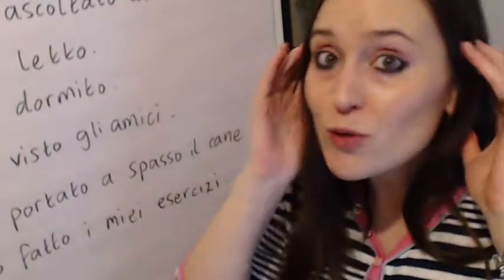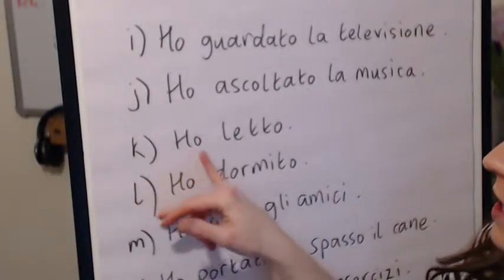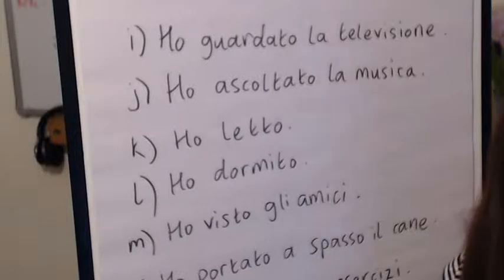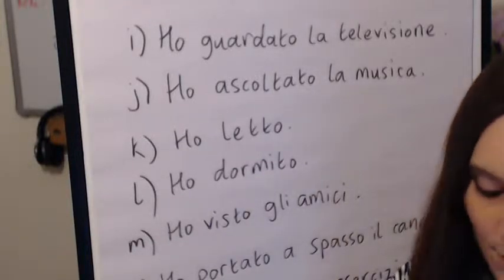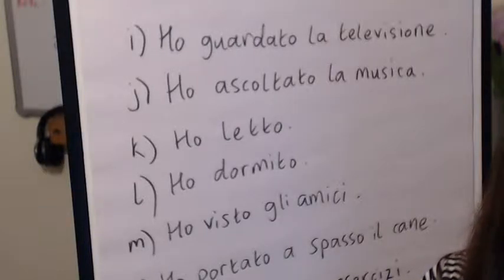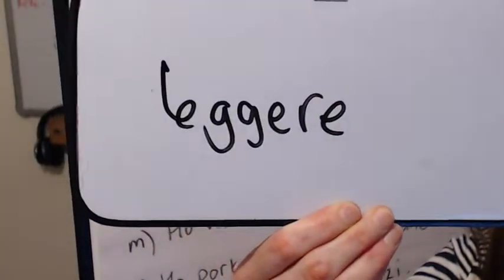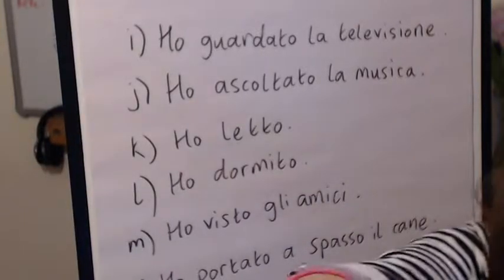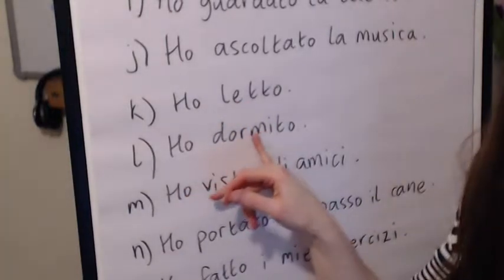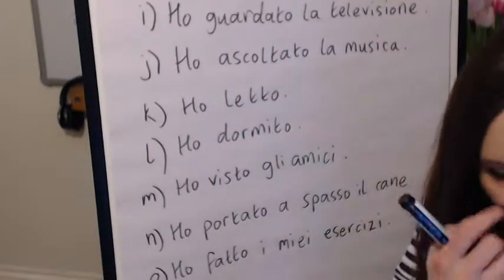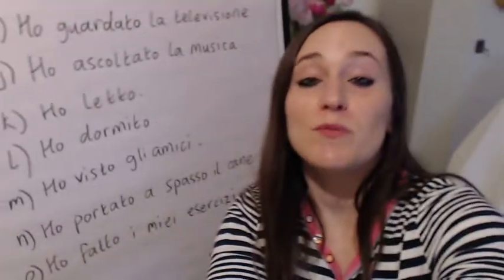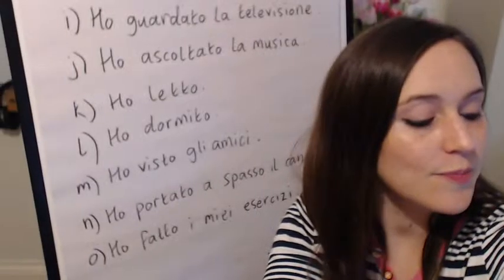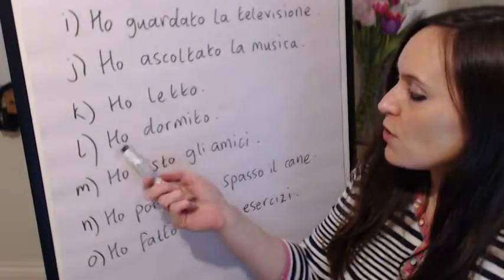Ho guardato la televisione — that one's quite obvious. I watched, from the verb guardare, which means 'to watch' or 'to look at' — la televisione. I was listening to music. Ho letto — this is an irregular past participle from the verb leggere. That's the verb leggere and letto means 'I read'. Ho dormito is from the I-R-E verb dormire, which means 'to sleep'.